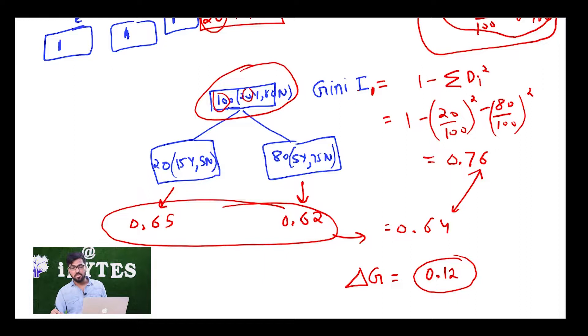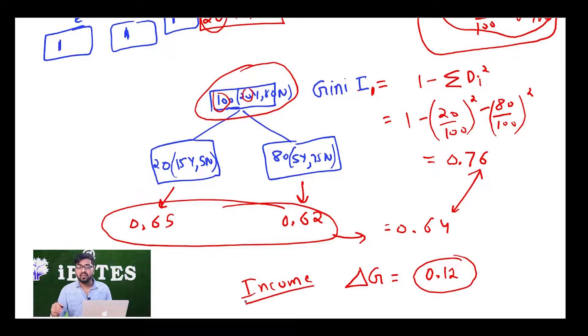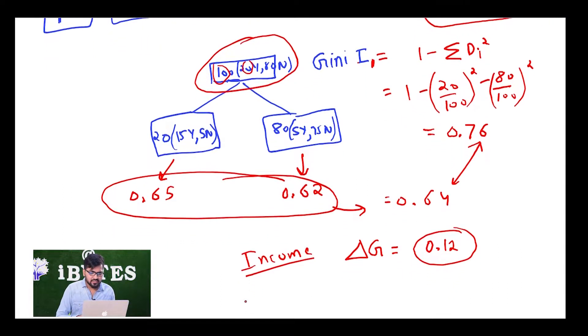Difference of Gini index. So basically this we have done for income. Now similar thing we are going to do for criminal and similar thing we are going to do for loan demand, and then finally we will be able to know whichever has the highest difference in Gini index, that is the feature that is going to be chosen. So Gini index is the one which is the most important and which is actually used and it is the most useful one.